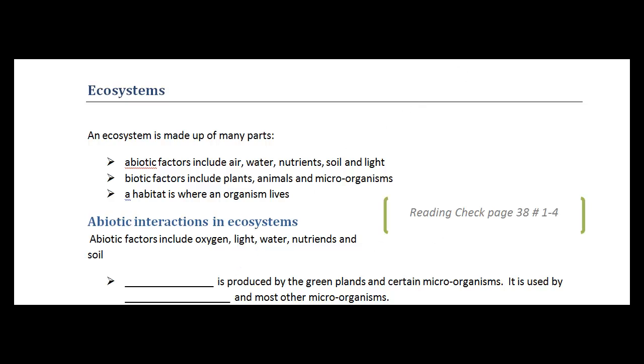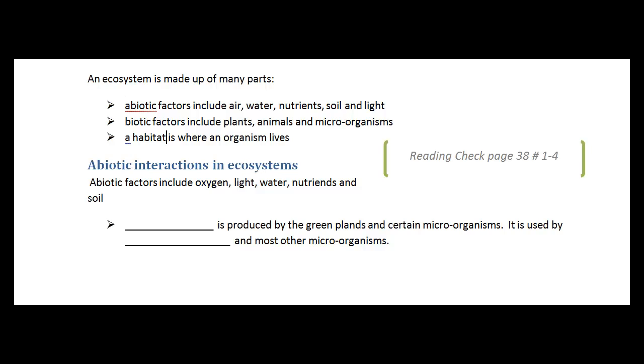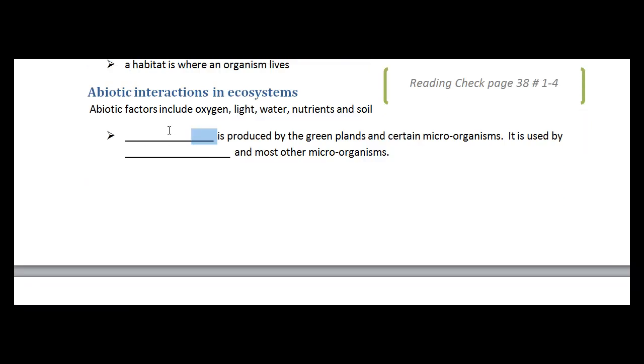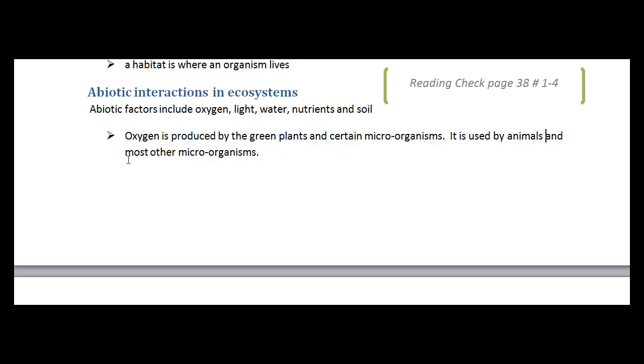Let's take a look at these abiotic factors that we've talked about. The first one I want to focus on, the first one I want to look at specifically is oxygen, which is probably one of the most fundamental abiotic factors. And oxygen is produced by green plants and certain microorganisms. So it's not only plants that create oxygen. There are a few microorganisms that do the same. And it's used by animals and most of the other microorganisms, the ones who don't produce oxygen.